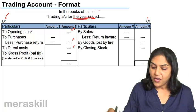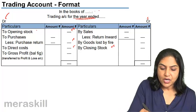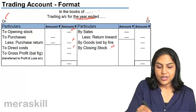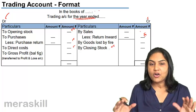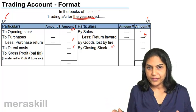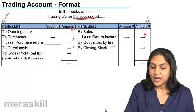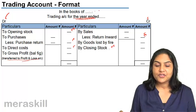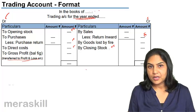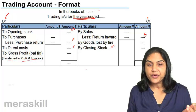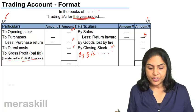On the credit side, we write closing stock and sales less returns. Opening stock plus purchases minus closing stock plus direct costs compared with sales gives us gross profit, which is the balancing figure transferred to the profit and loss account. If the cost of goods sold is more than sales, we would get a gross loss, and we write it as gross loss carried to profit and loss account.